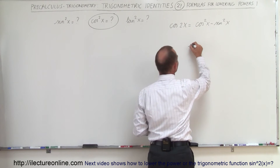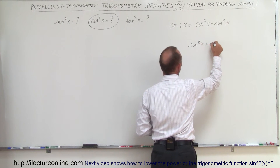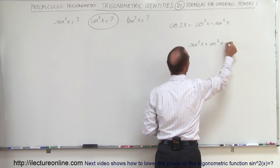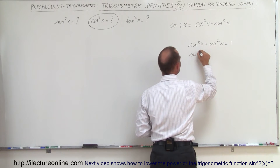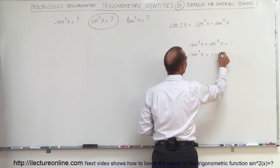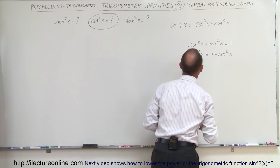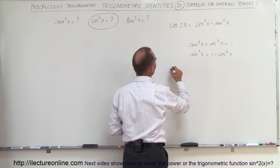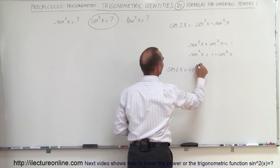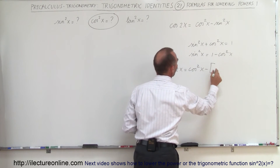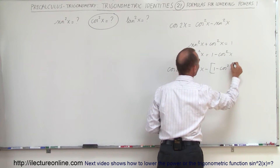We remember that sine squared of x plus cosine squared of x equals 1, which means we can write sine squared of x equal to 1 minus cosine squared of x, and substitute that into our equation. So if we do that, we get cosine of 2x equals cosine squared of x minus, and in brackets we write 1 minus cosine squared of x.